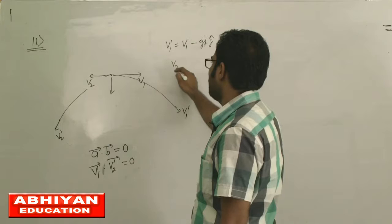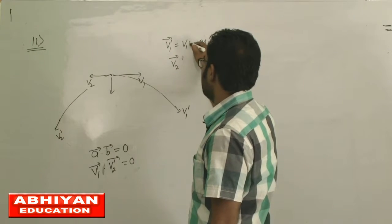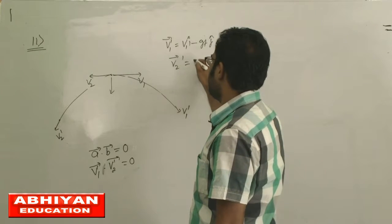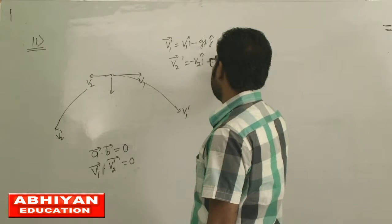Similarly V2 vector will be minus V2i minus gtj.